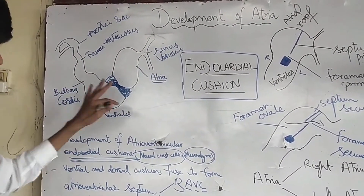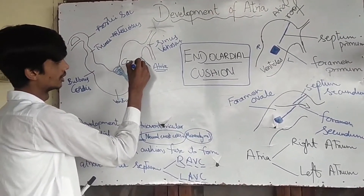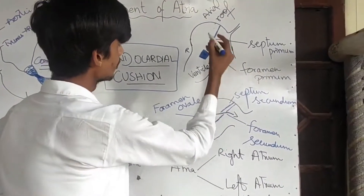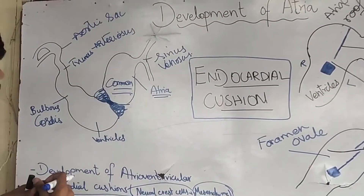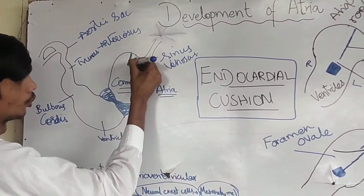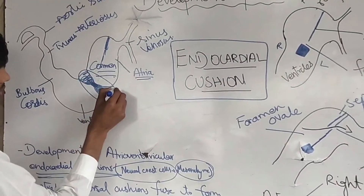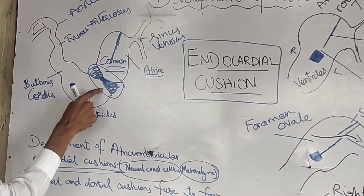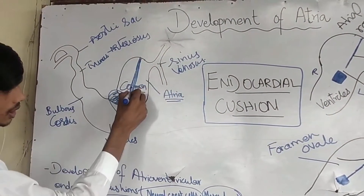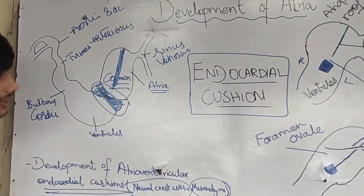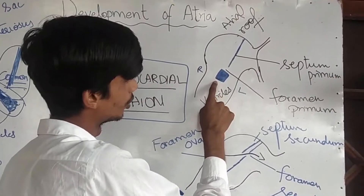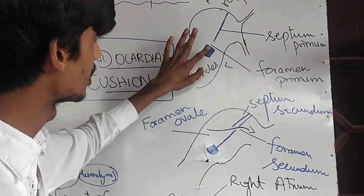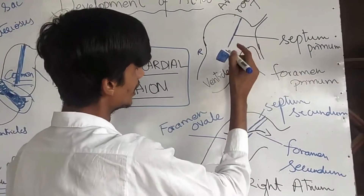The primitive atrium is a common tube that will be divided into right and left parts. From the atrial roof, there is growth of tissue — the mesenchyme and endocardium — growing towards the endocardial cushion. This growth is known as the septum primum. When it approaches the endocardial cushion, a space is left between them known as the foramen primum.